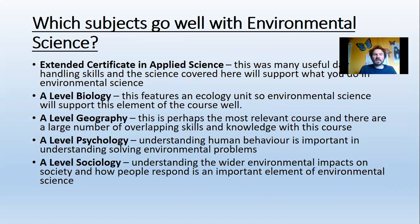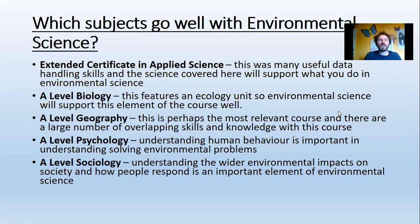In terms of which subjects it goes well with, lots of our students cover the extended certificate in applied science, which has elements of biology, chemistry, and physics, and this really helps with understanding all those different elements of environmental science. Many of our students do A level geography and they go really well together and complement each other. Similarly with A level biology, there's a big ecology unit, so there are some really good overlaps there. Also, if you think about understanding human behaviour and the human impact on the environment, a deeper understanding can be gained through studying A level psychology and sociology — those two are also really good ones to go along with it.